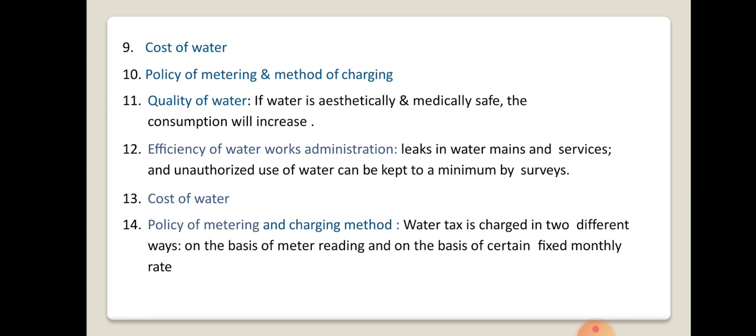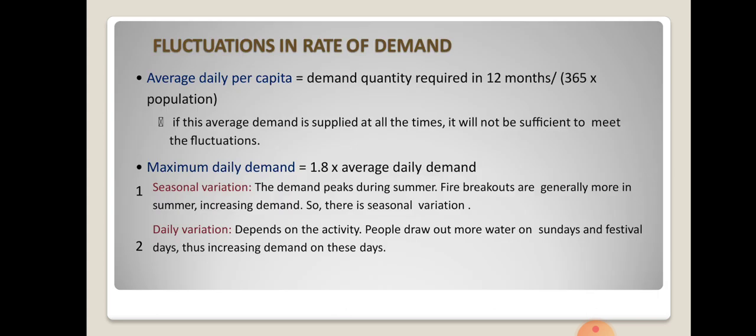Other factors affecting per capita demand include the cost of water — for example, water authority meters fitted in households estimate cost based on meter readings. The policy of metering and method of charging also matters. Quality of water is important — if it is aesthetically and medically safe, consumption increases; if it is not aesthetically pure, people will not use much of it. The efficiency of water works administration also affects water demand.